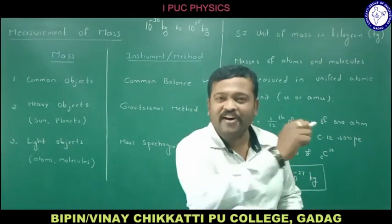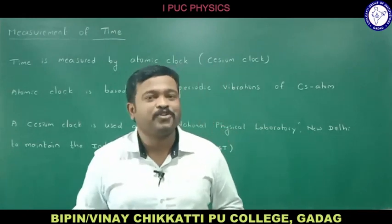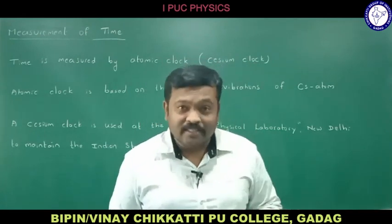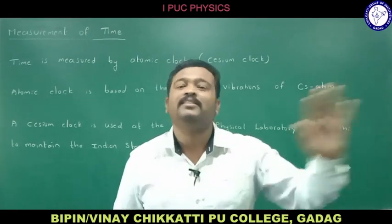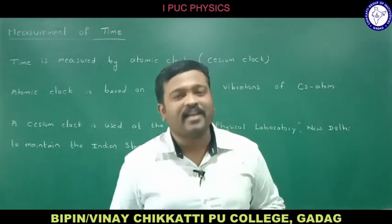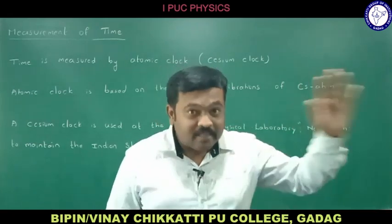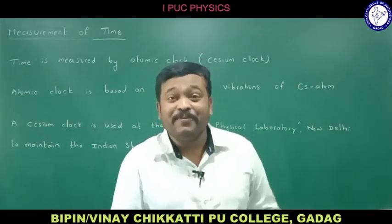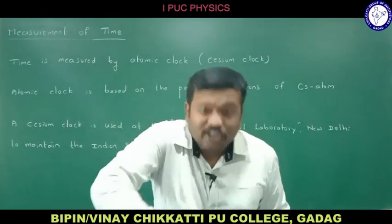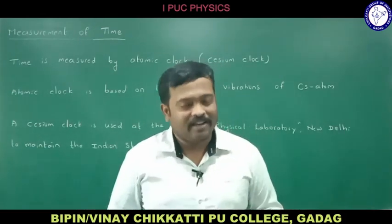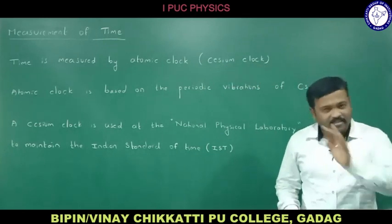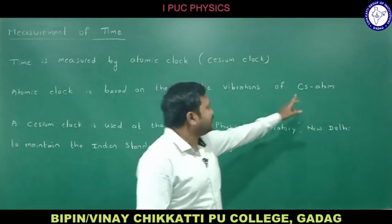Now let us move to the measurement of time. Time is the duration of an event. In olden days, time was measured by sun dials like Jantar Mantar. 'Jantar' is derived from 'Yantra' meaning instrument, and 'Mantar' means measurement. Then came pendulum clocks, where the oscillations of the pendulum gave the time. Nowadays we use atomic clocks, particularly the cesium clock.